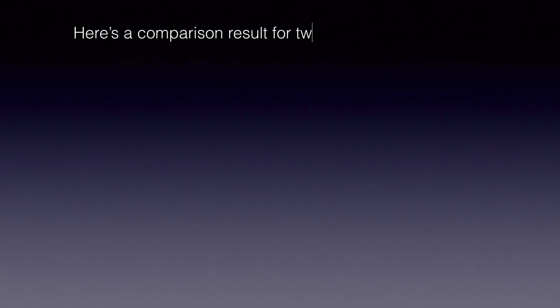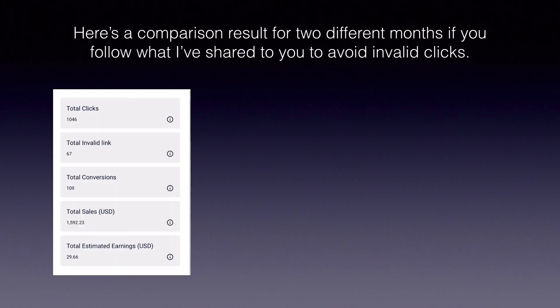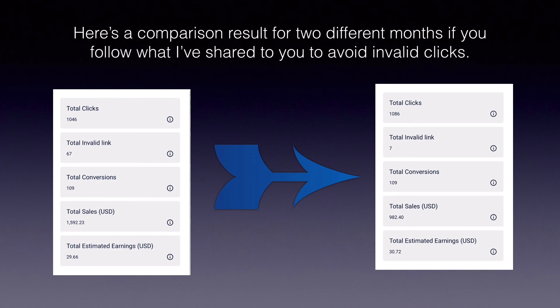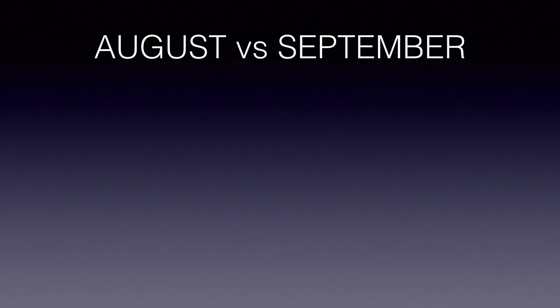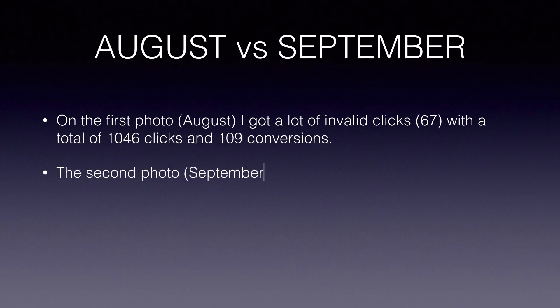Here's a comparison result for two different months if you follow what I have shared to avoid invalid clicks. Let us see August vs September results. In August, I got a lot of invalid clicks — 67 — with a total of 1,046 clicks and 109 conversions.